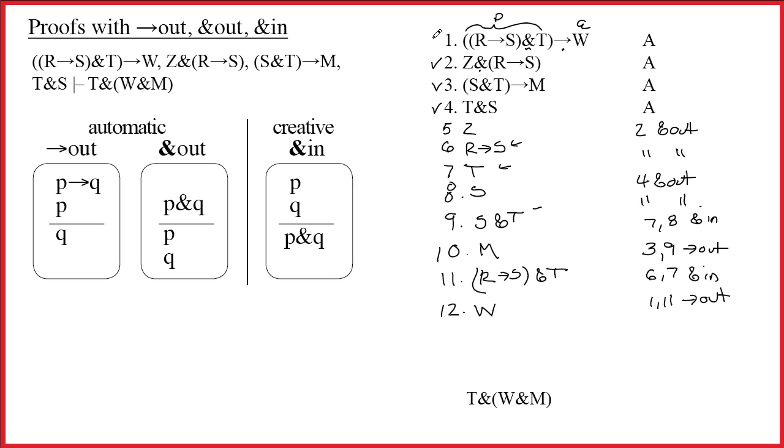Now, at this point, you'll notice I've checked off everything that I was interesting up here. R arrow S, I never worked on that, but it turns out I don't need ever to do arrow out on that. Its role in this proof was to be available to be half of this antecedent.